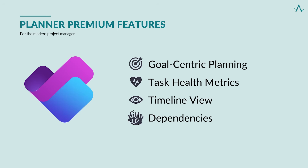Planner Premium adds a layer of intelligence and structure that goes beyond basic task tracking. With goal-centric planning, teams can align work with larger outcomes. Task health metrics make it easy to spot what's at risk. The timeline view brings clarity to project schedules and dependencies, helping you map out how work connects so that nothing slips through the cracks.